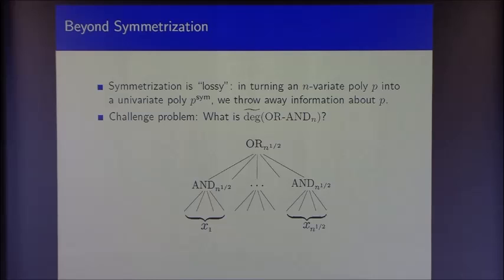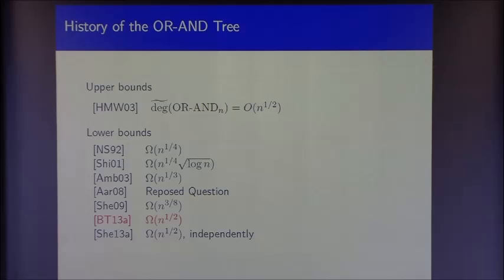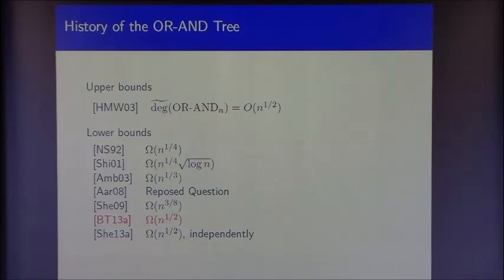Here's a brief history of progress on resolving the approximate degree of this function. In 2003, Høyer, Mosca, and de Wolf proved an upper bound of √n. Nisan and Szegedy's fundamental result about the AND function immediately yields a lower bound of n^{1/4}, since a single AND gate within the function has approximate degree at least n^{1/4}. In 2008, Aaronson reposed the question during a FOCS tutorial because the problem seemed to capture the limitations of symmetrization. Earlier this year, Mark and I proved a matching lower bound of n^{1/2}, and Sherstov independently achieved the same result around the same time.